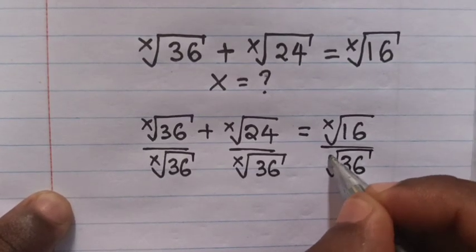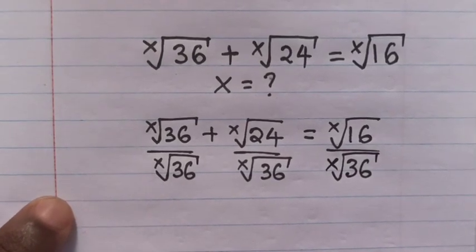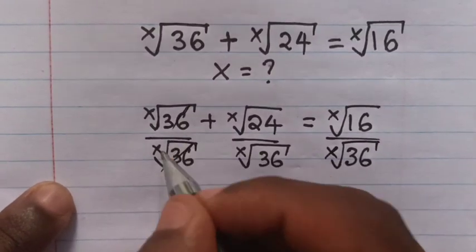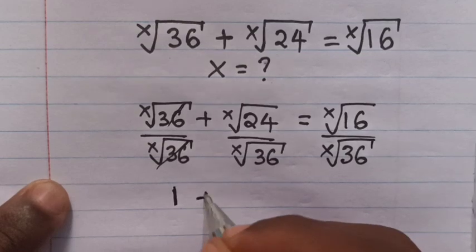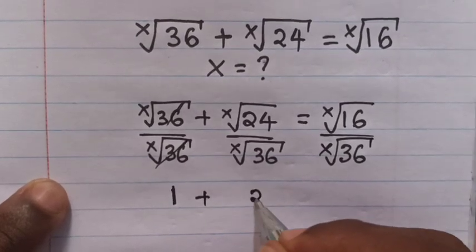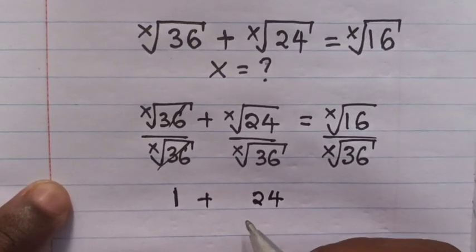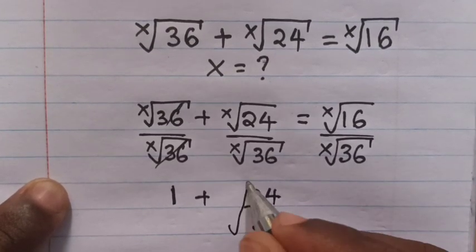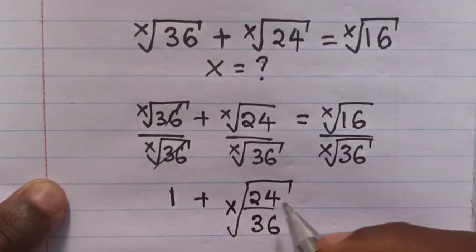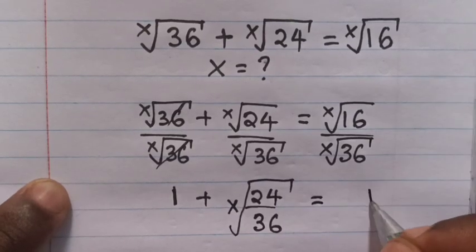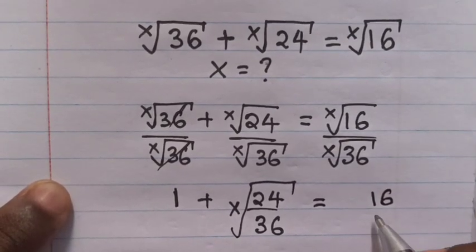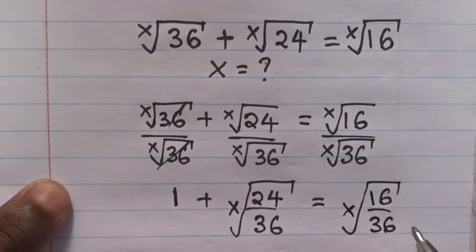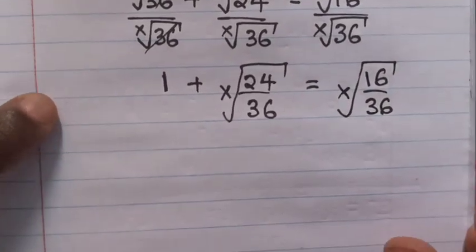After dividing by 36 root of x on both sides, this and this will cancel, so we remain with 1. So: 1 plus 24 over 36 root of x equals 16 over 36 root of x.